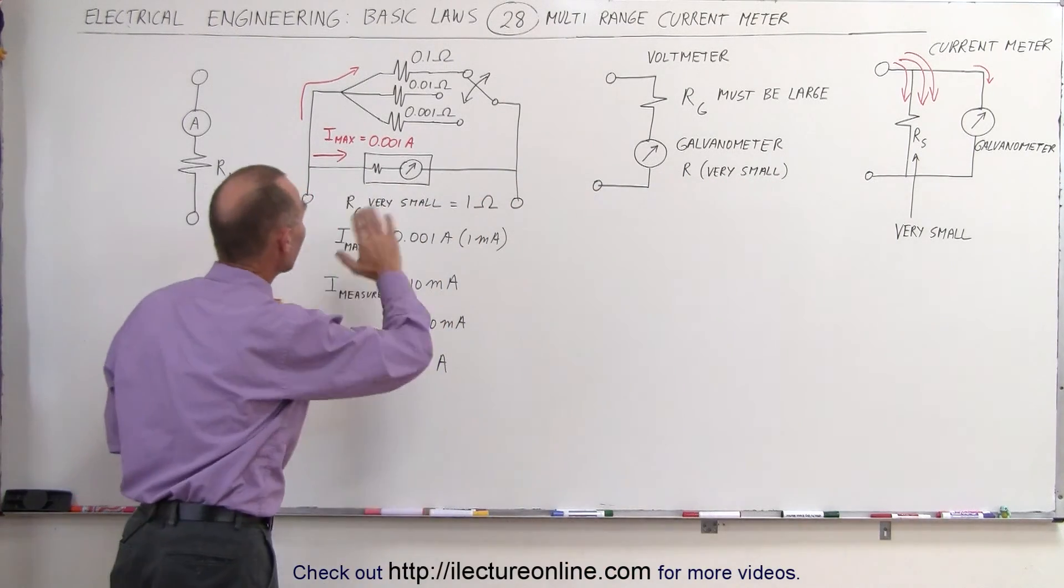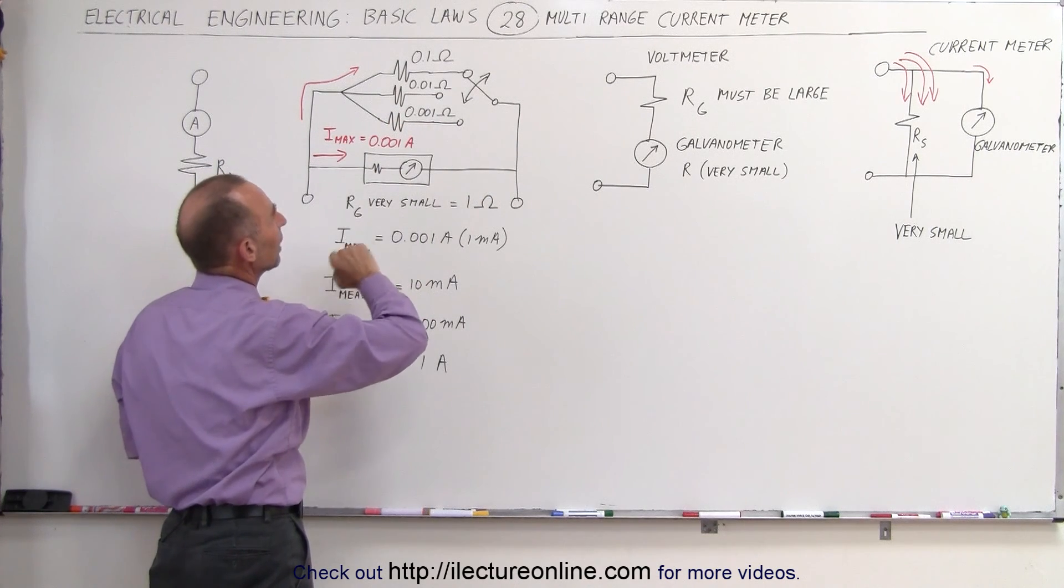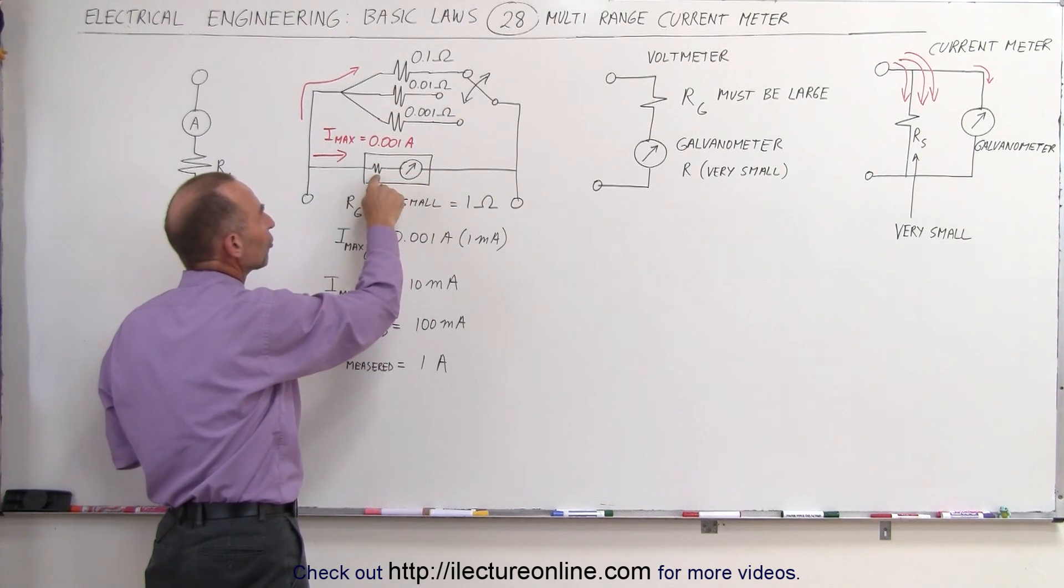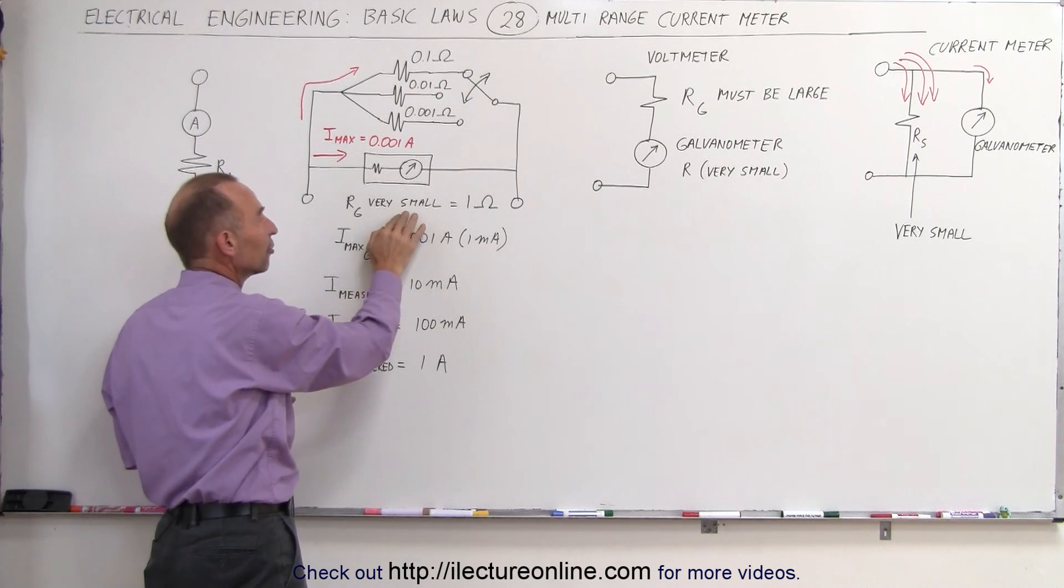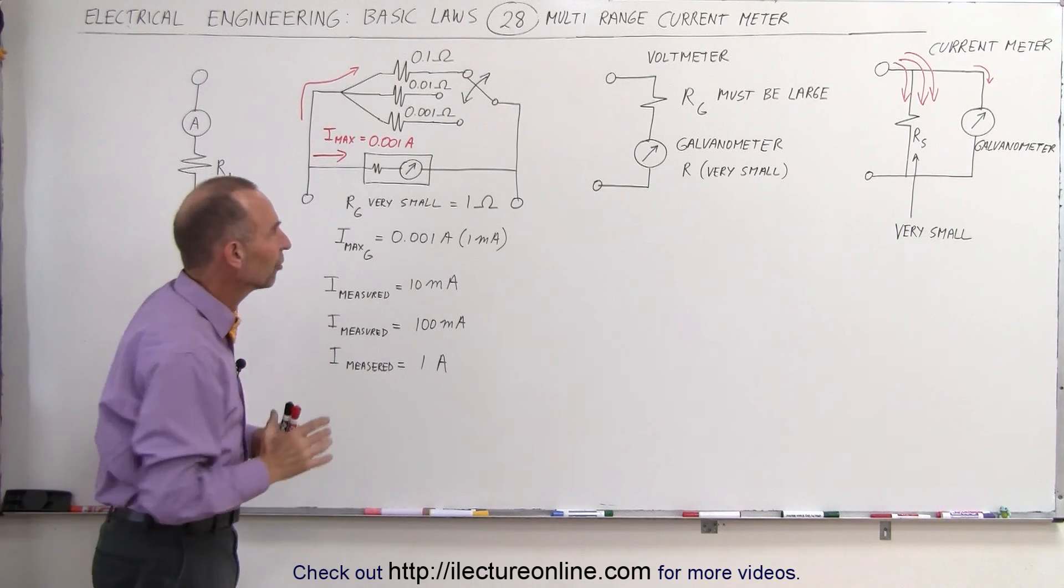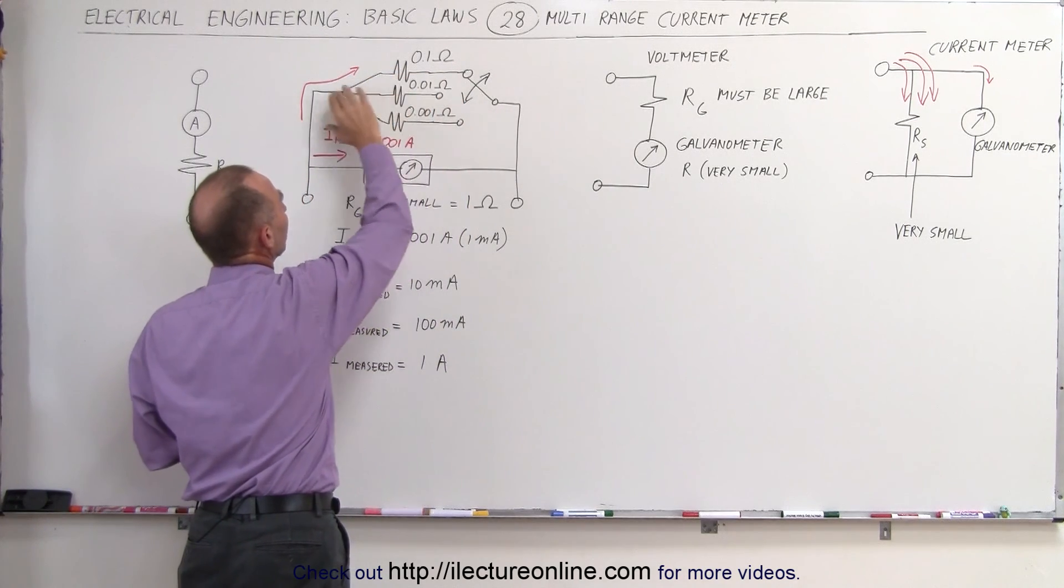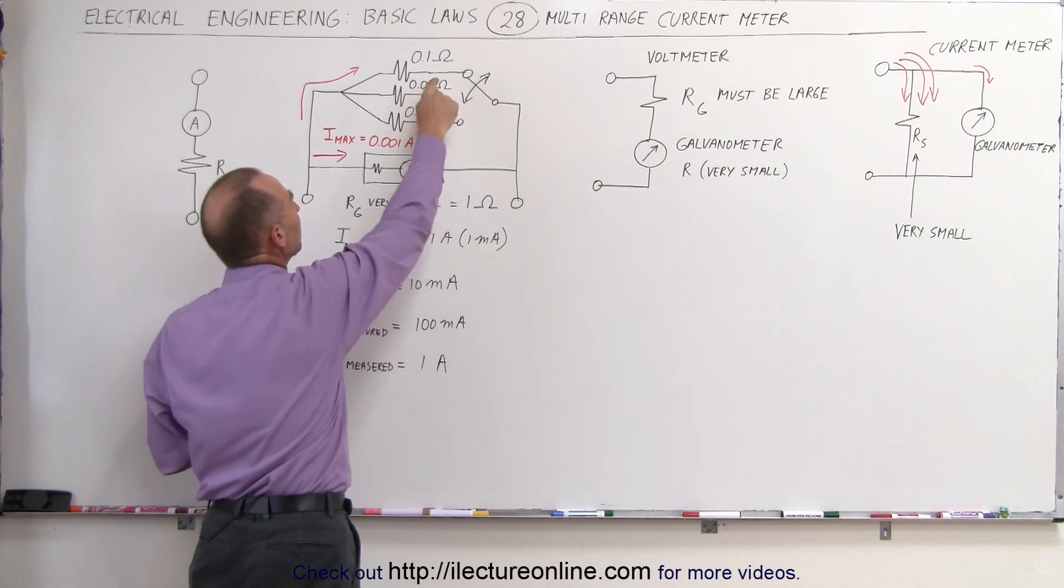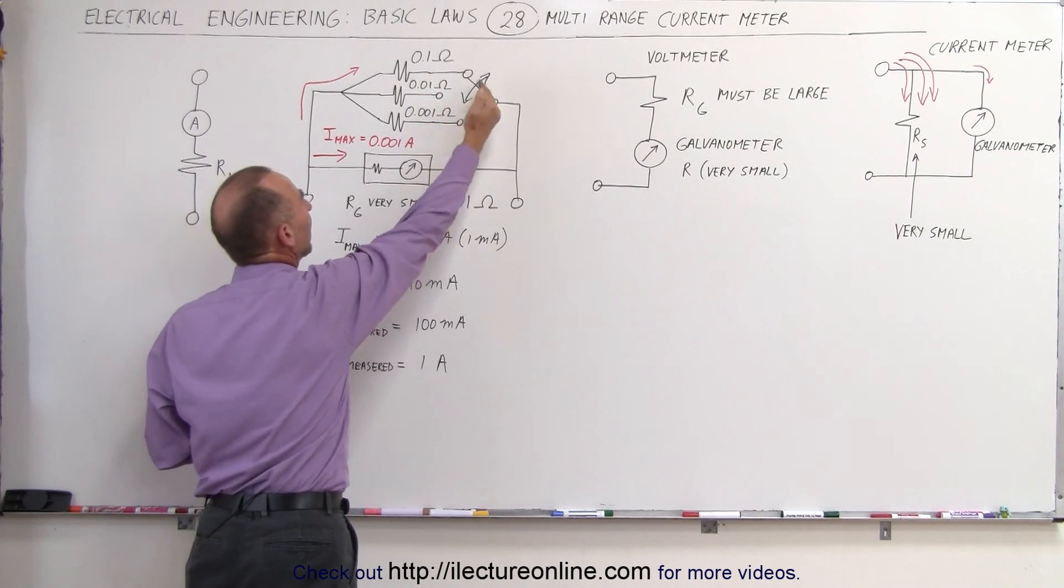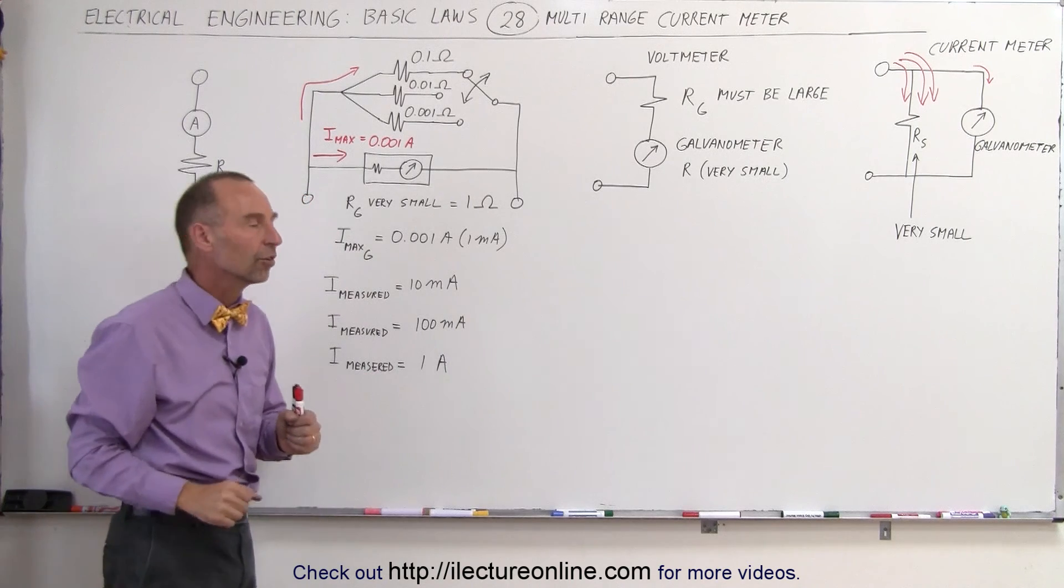Now here we have a schematic of what a variable or multi-range current meter could look like. Here's the galvanometer, which has a small amount of resistance. Let's say that the resistance of the galvanometer, being very small, is about 1 ohm, just for the sake of doing the problem here. And then we have three other resistors that are going to be in parallel to the galvanometer, that can either be a tenth of an ohm, one one hundredth of an ohm, or one one thousandth of an ohm, and we have a knob setting that allows us to go between the three different kind of resistors.